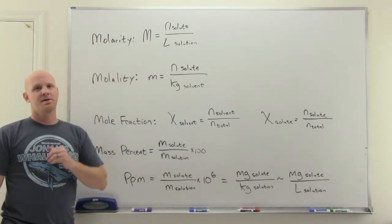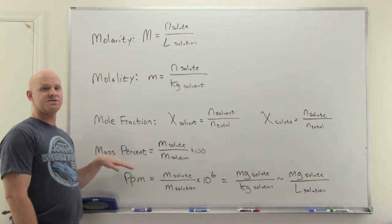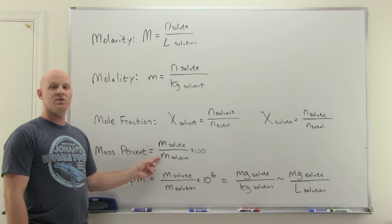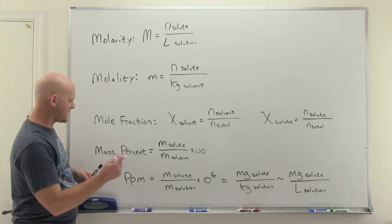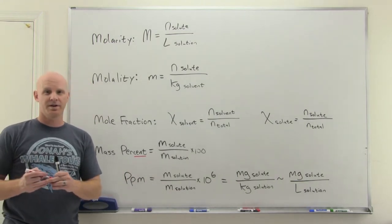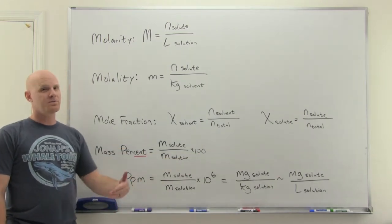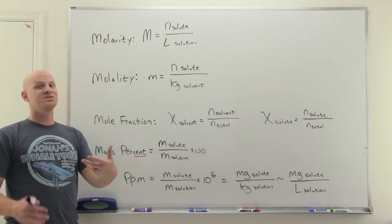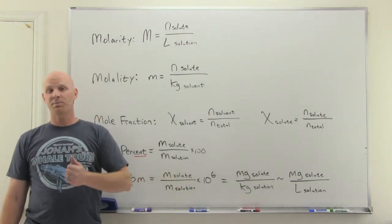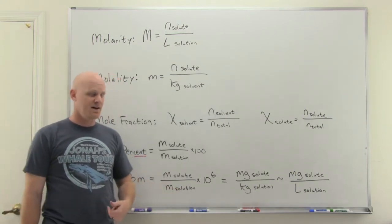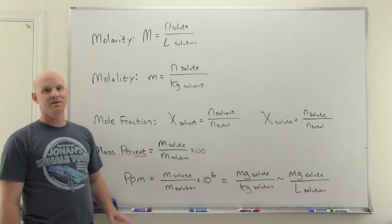Mass percent is the mass of solute divided by the total mass of solution, times 100. For more dilute solutions we use parts per million (ppm): mass of solute divided by total mass of solution, times one million. Equivalently, ppm can be expressed as milligrams of solute per kilogram of solution. For dilute aqueous solutions, this further simplifies to milligrams of solute per liter of solution, since 1 kg of water ≈ 1 L.